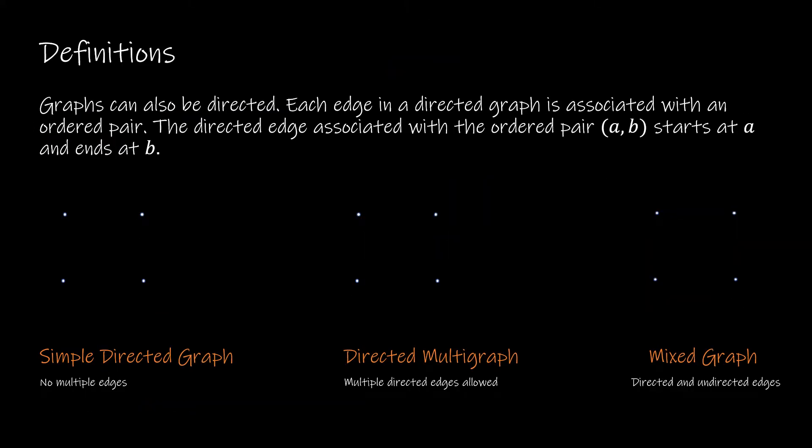So far we've only looked at undirected graphs. Now we'll look at directed graphs. In a directed graph, each edge is associated with an ordered pair where the first entry tells us the starting vertex and the second entry gives us the ending vertex. For instance, A to B where A is the starting vertex and it ends at B. This is called a simple directed graph because there are no multiple edges or loops.